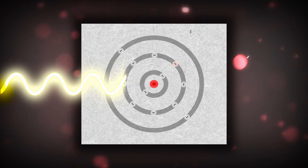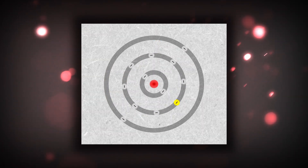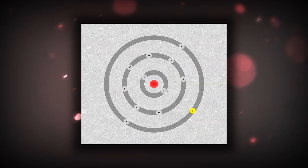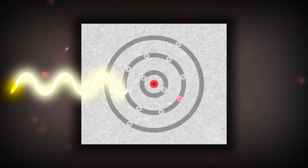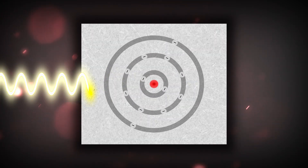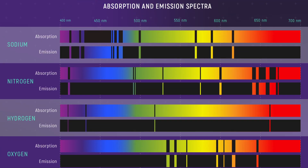If an electron absorbs a photon of the exact energy of the difference between two energy levels, it will instantaneously jump up to the next one without spending any time in between. When it instantaneously jumps back down, it'll emit the photon again. For bigger jumps, higher energy photons are required. This explains the black lines that can be seen on the absorbance spectra for different elements — they're the exact frequencies of light that correspond to the very specific electron transitions for that element.